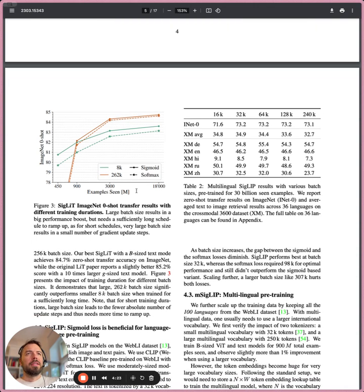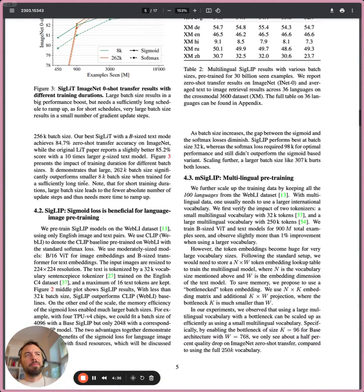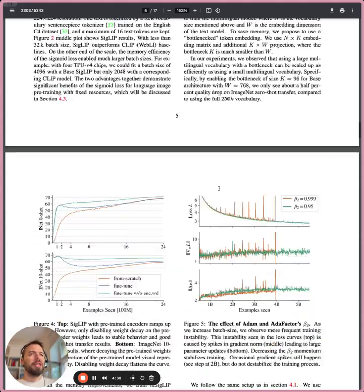Also over here, you can see that the sigmoid loss variant, which is a solid line, is usually at least a little bit better than the dashed line, which is the softmax variant. And they've investigated it both for LiT and LiB variants. They also did multilingual pre-training that we won't go into.